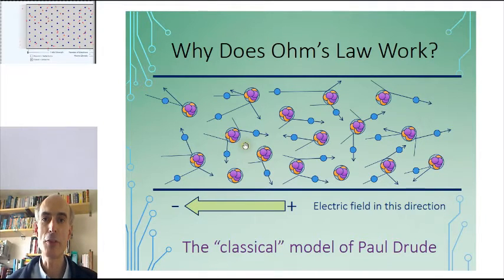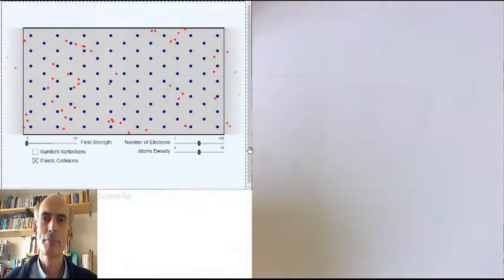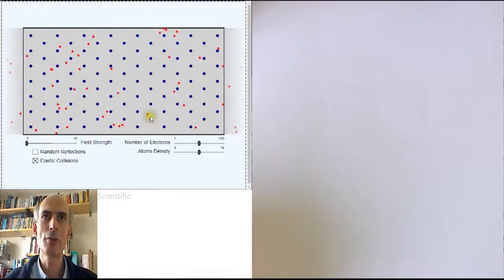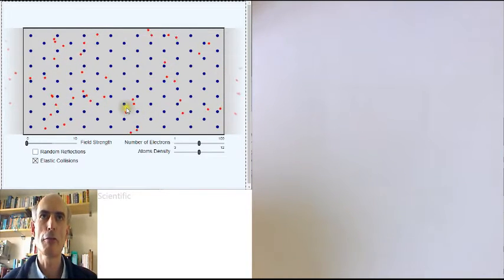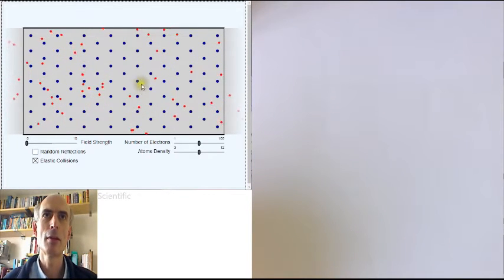So we could animate this, and it would look something like this, with these little red electrons moving around and bouncing off the blue nuclei.